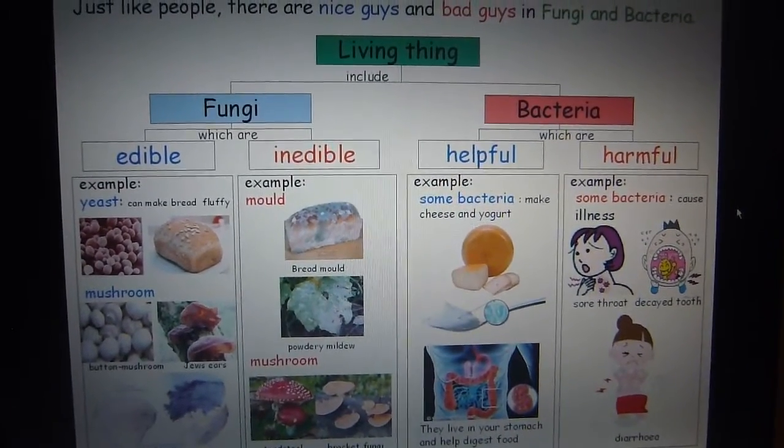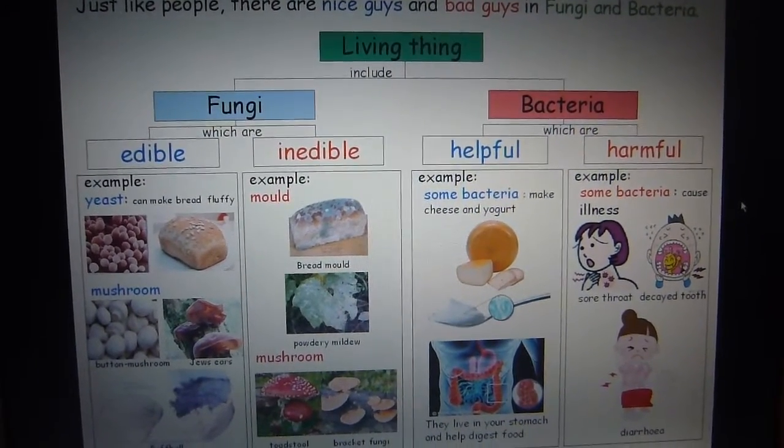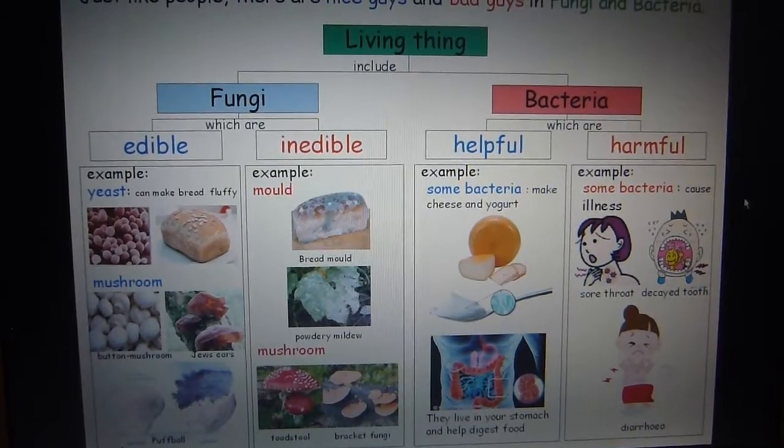Living things include fungi which are edible. Example, yeast can make bread fluffy, mushroom, button mushroom, Jaws ear, puffball.